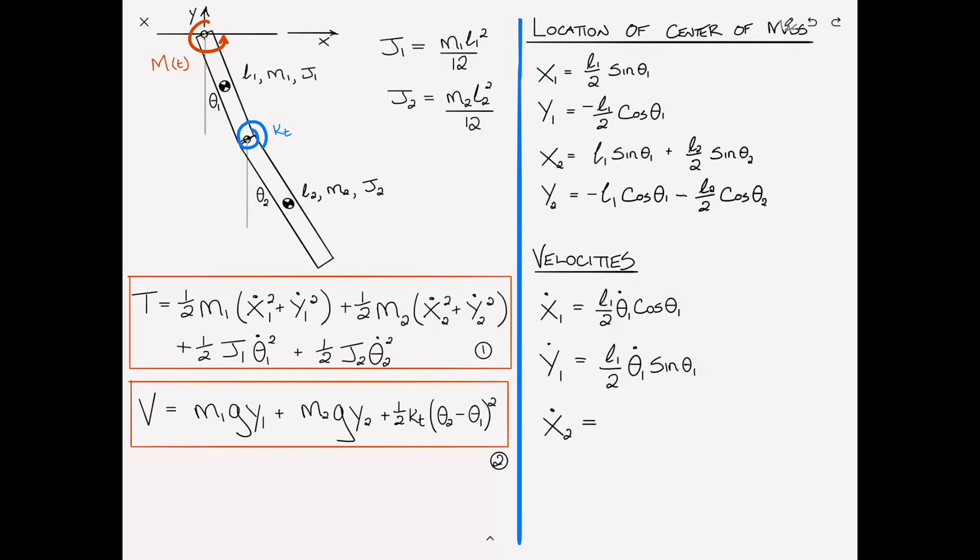For x2 dot, similarly we take the derivative of x2, and it's l1 theta 1 dot cosine of theta 1 plus one-half l2 theta 2 dot cosine of theta 2. Differentiating y2 dot gives us, the negatives cancel, so l1 theta 1 dot sine of theta 1, and plus one-half l2 theta 2 dot sine of theta 2.